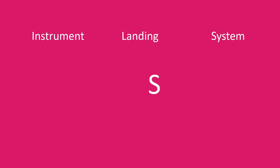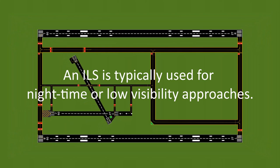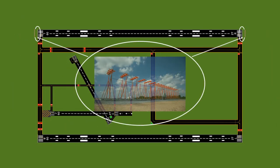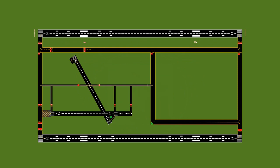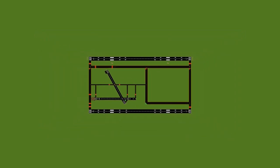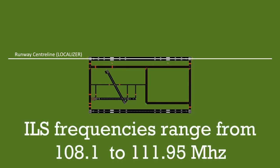Next we'll look at the ILS, which stands for Instrument Landing System. We're going to add a couple of antennas — one at each end of the runway and two more a little down the runway, usually next to the aim point marker. Every runway equipped with ILS will have its own separate ILS, and usually each end of that runway will have its own ILS as well.